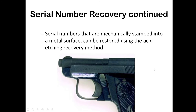This acid etching method can recover a serial number off a firearm. It's also useful for stolen car parts — serial numbers are put on car parts like Lamborghini or Ferrari engines, which are expensive and have a black market. You can trace back to stolen and chopped-up cars using this same method.